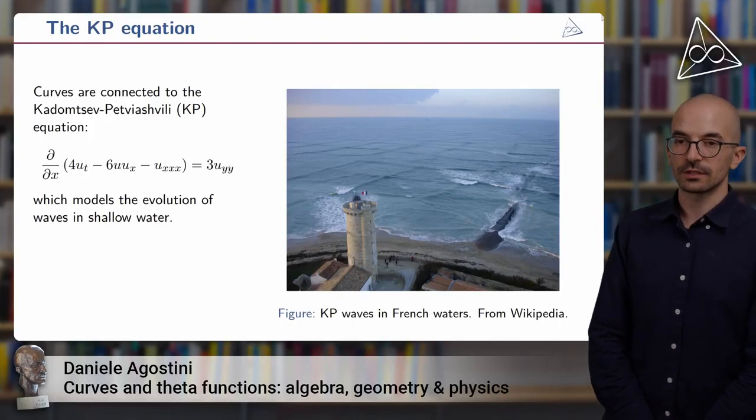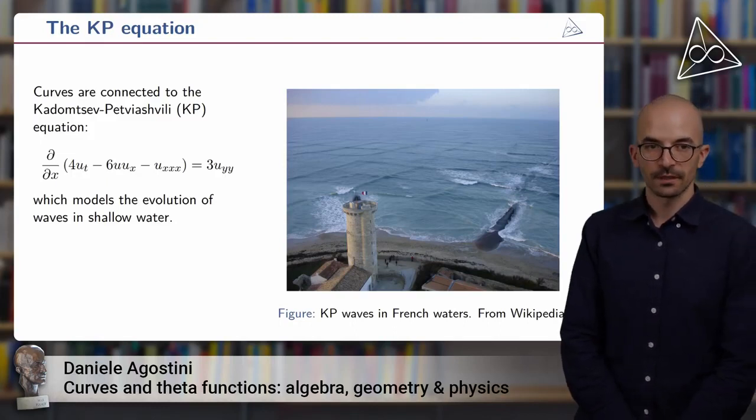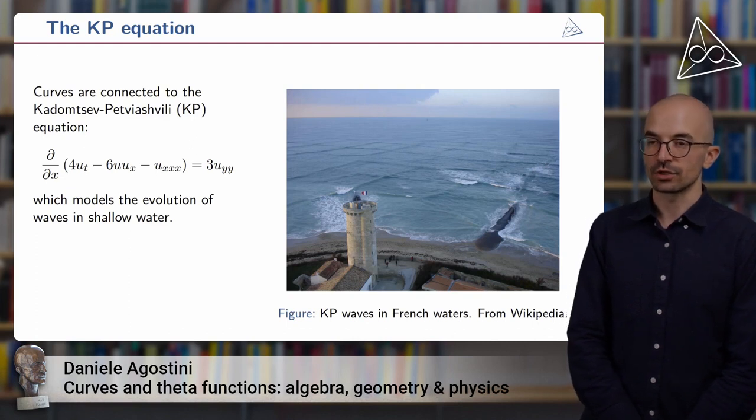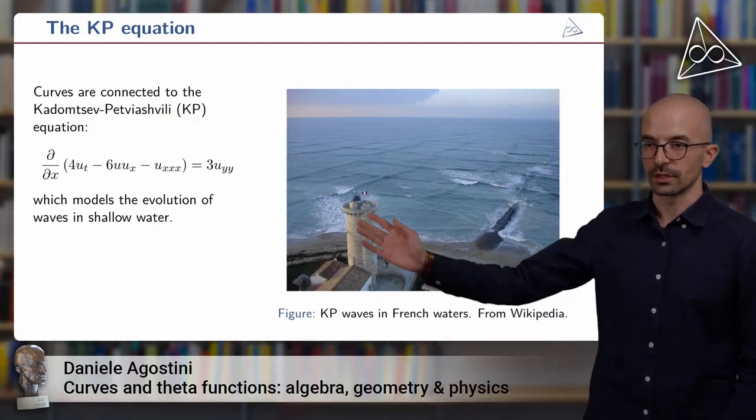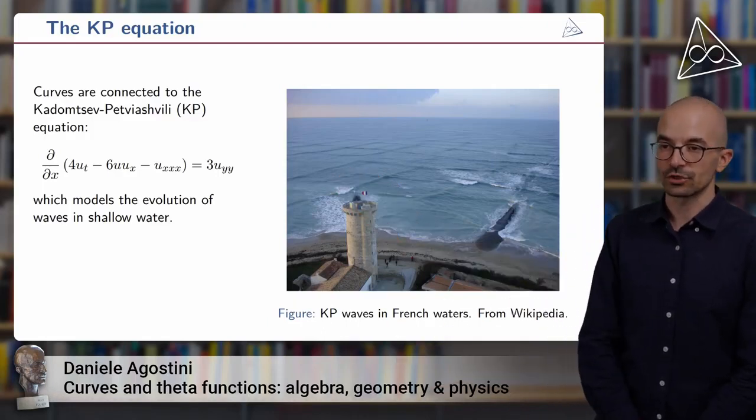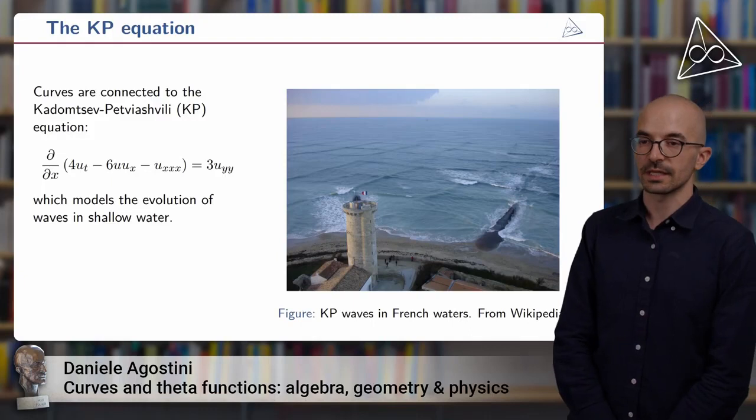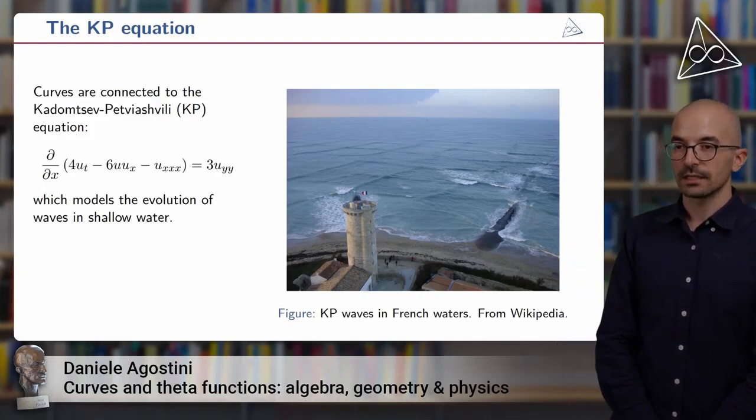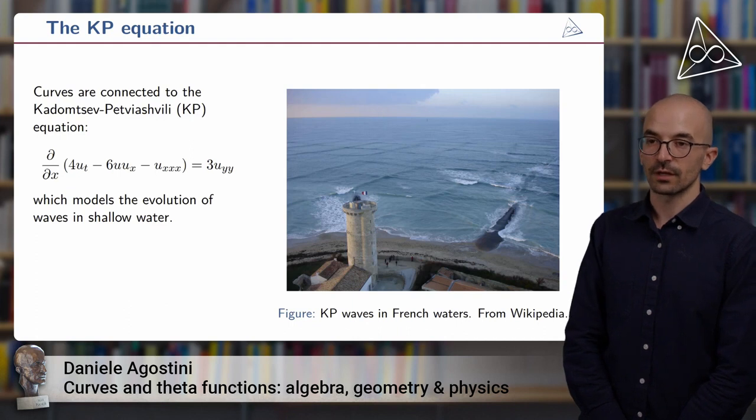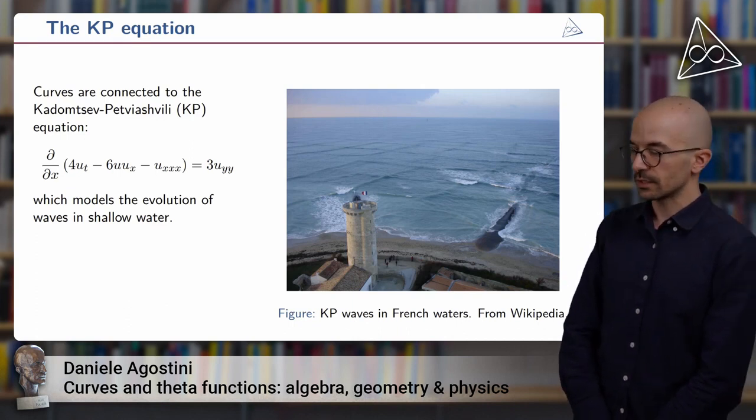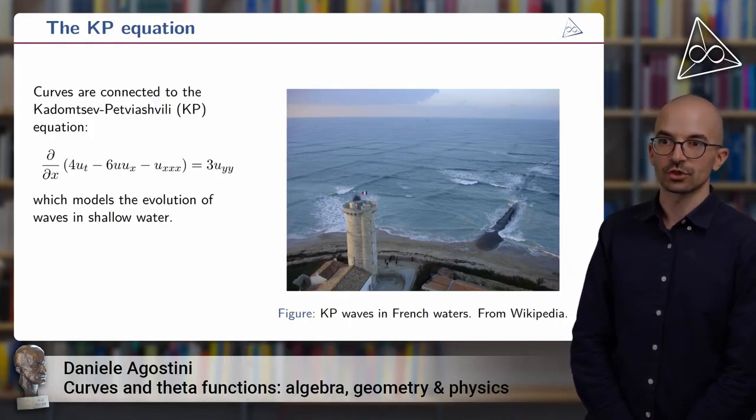This was a bit of algebra and geometry of the curves, but they also have a physical aspect. The physical aspect comes through the KP equation. So the KP equation is the following partial differential equation in three variables x, y, and t, and it describes the evolution in time t of a water wave in two dimensions x and y. In particular, this corresponds to waves in shallow water.